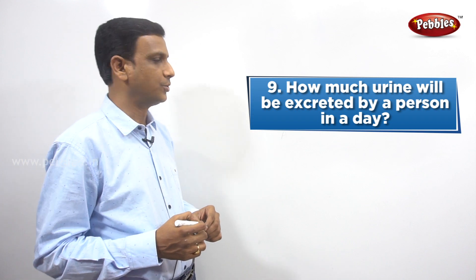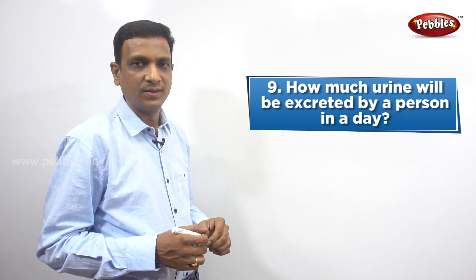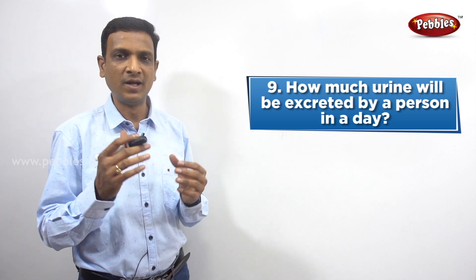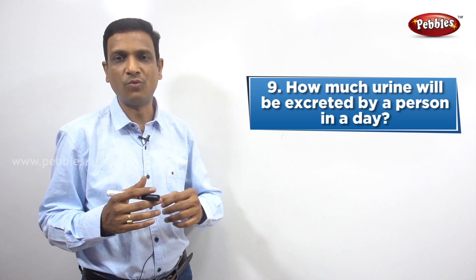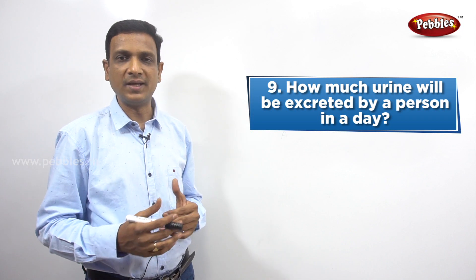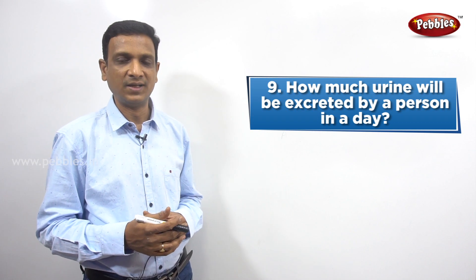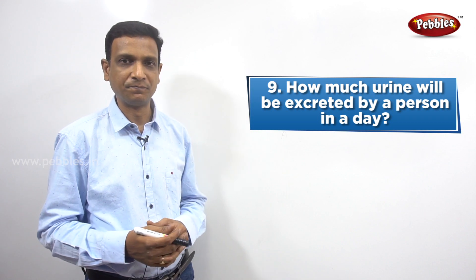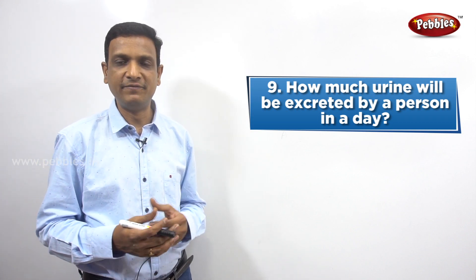The next question: how much urine will be excreted by a person in a day? There is a specific volume in an average person. The amount of urine excreted depends on the amount of water we drink. If a person drinks very little water, they cannot excrete more urine. Every day we need to drink at least three liters of water.